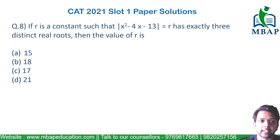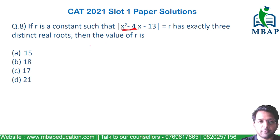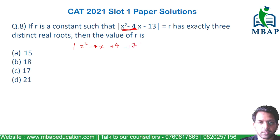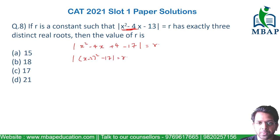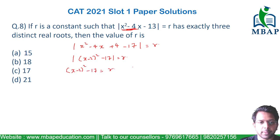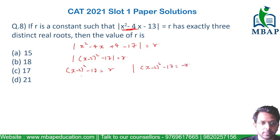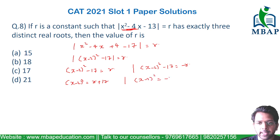The question is: for what value of r will this equation have three distinct real roots? Let's first expand x² - 4x - 13 as a perfect square: x² - 4x + 4 - 17, which is (x - 2)² - 17. Opening the mod, on one side (x - 2)² - 17 = r, giving (x - 2)² = r + 17, and on the other side (x - 2)² - 17 = -r, giving (x - 2)² = -r + 17.